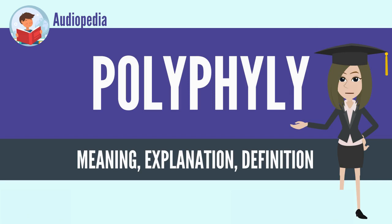A polyphyletic group is a set of organisms, or other evolving elements, that have been grouped together but do not share an immediate common ancestor. The term is often applied to groups that share characteristics that appear to be similar but have not been inherited from common ancestors. These characteristics are known as homoplasies, and the phenomenon of homoplasies is known as convergent evolution.